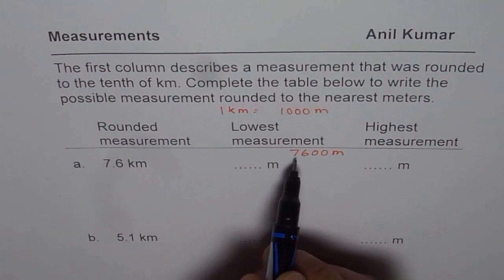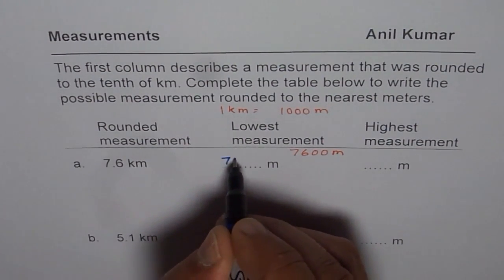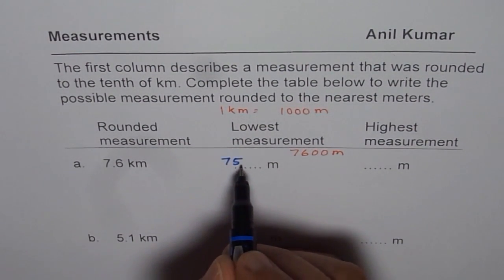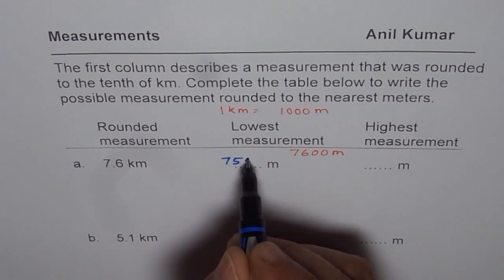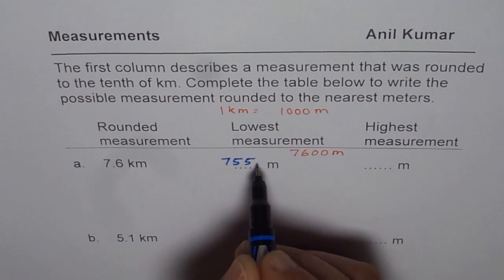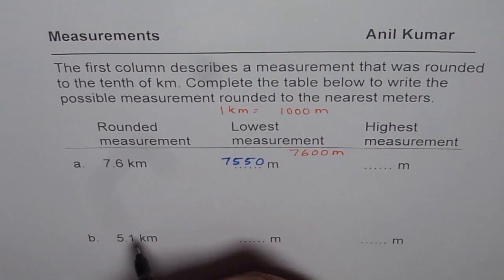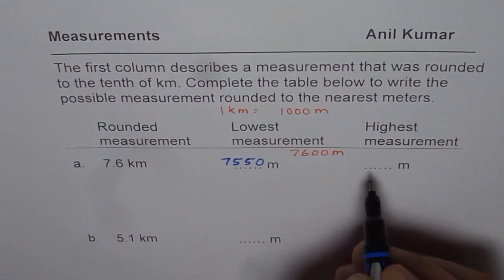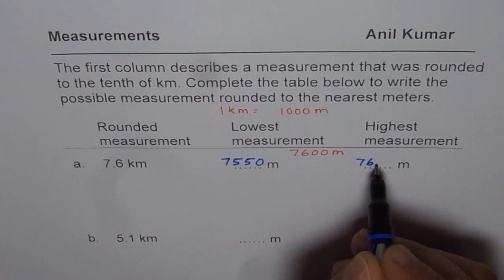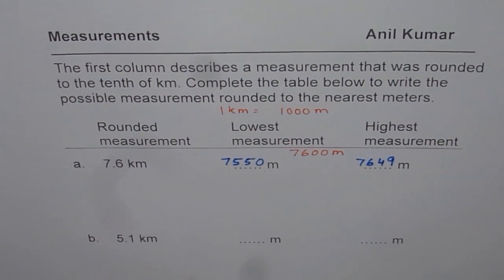So the lowest could be 75, and this number has to be 5 or more and so it could go higher, 7.55 and that could be because we are looking for the lowest number, 0, right? And the highest could be 76. This number has to be less than 5. So 4 and 9. You get an idea.